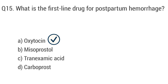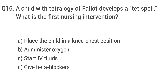Question number sixteen. A child with tetralogy of Fallot develops a tet spell. What is the first nursing intervention? The right answer is option A: place the child in the knee-chest position.